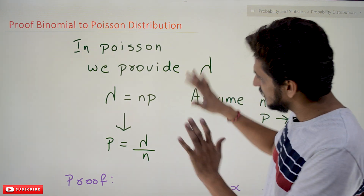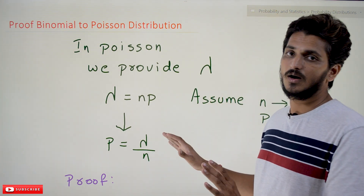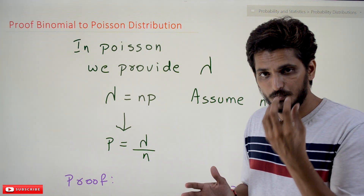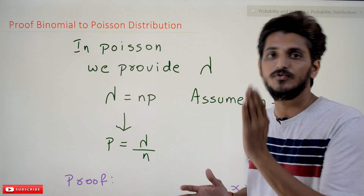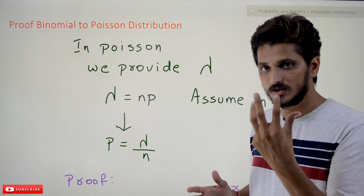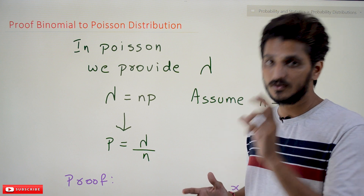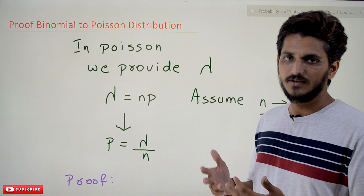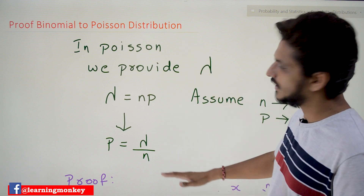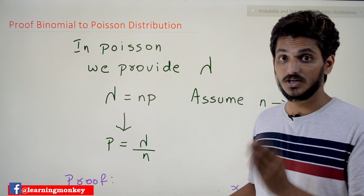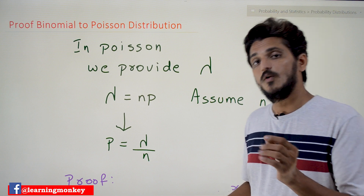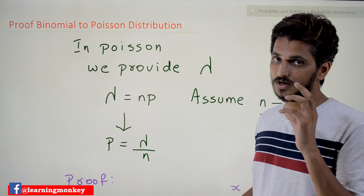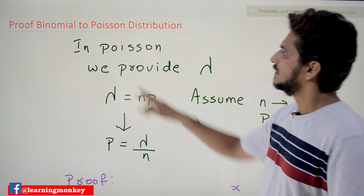In this class we are going to prove the derivation from binomial distribution to Poisson distribution — specifically how the Poisson probability mass function equation is obtained. In our next class we are going to understand why n tends to infinity.